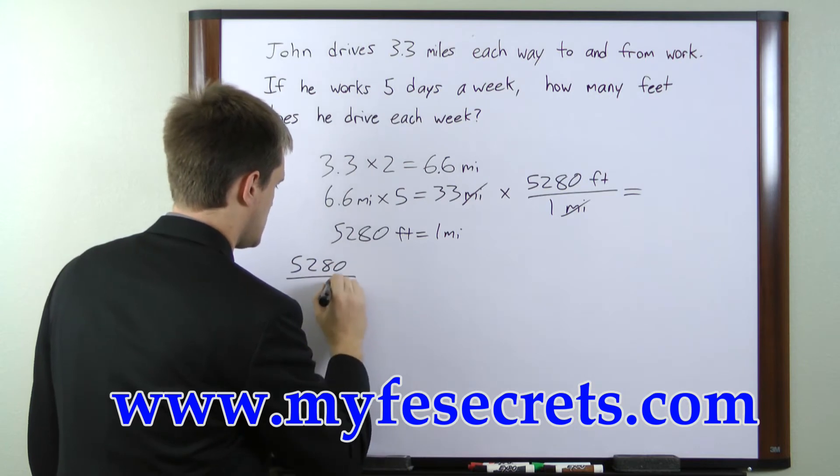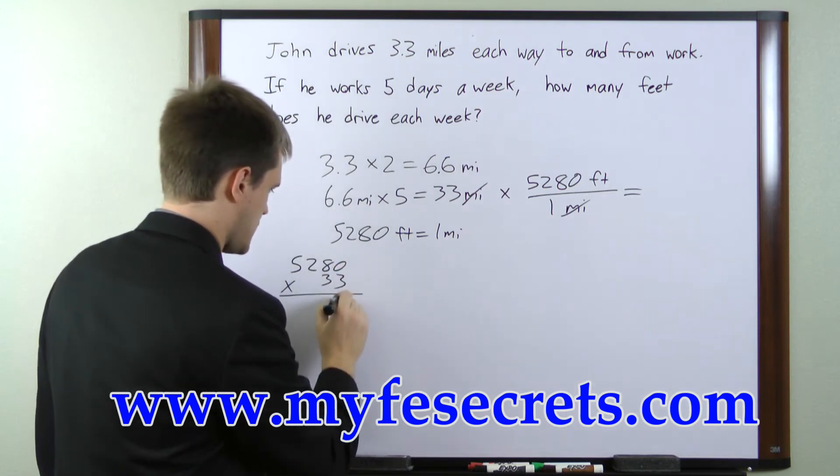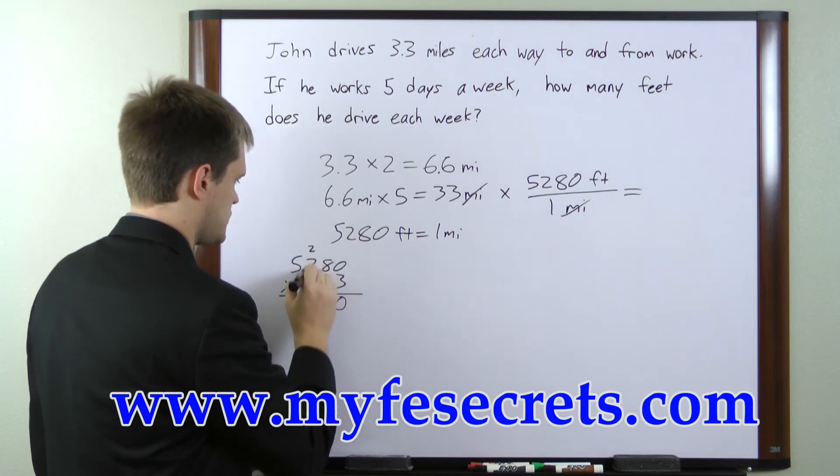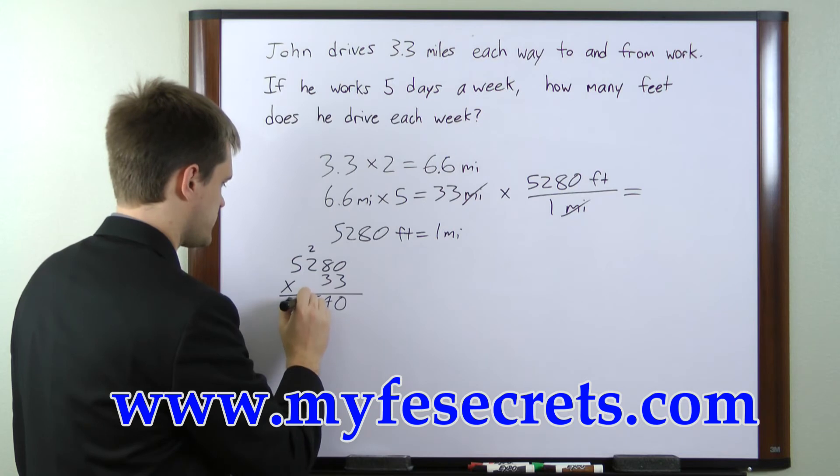5,280 times 33. 3 times 0 is 0. 3 times 8 is 24. 3 times 2 is 6 plus 2 is 8. 3 times 5 is 15.